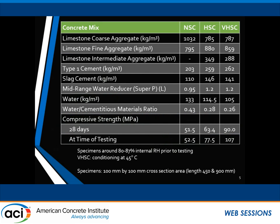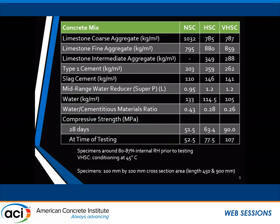In this study I used three different concretes — all limestone concretes with strengths of 50, 77, and 100 MPa. The specimens were all conditioned to dry out, reaching between 80 and 87 percent internal relative humidity. For the higher strength concrete, they were conditioned at 45°C just to bring them down to that relative humidity — otherwise I would have had no furnace left.